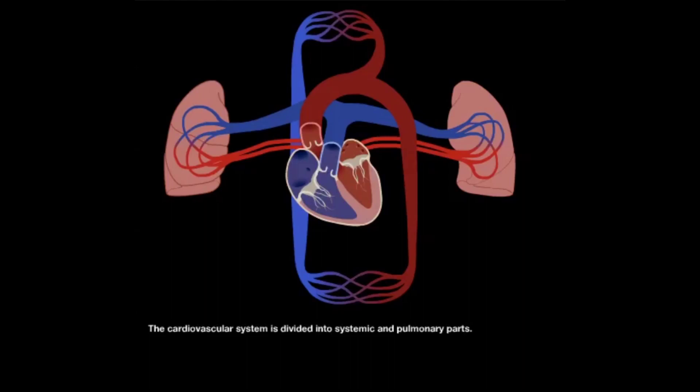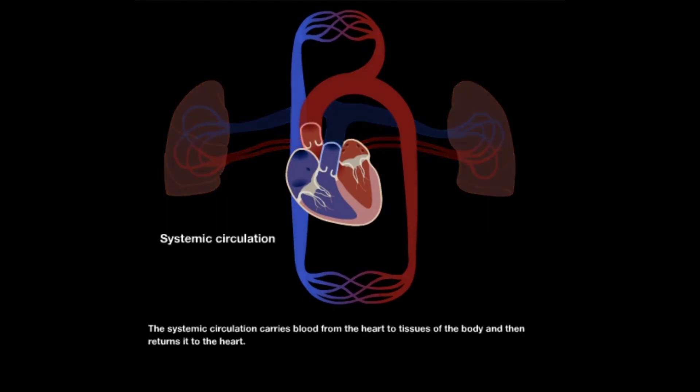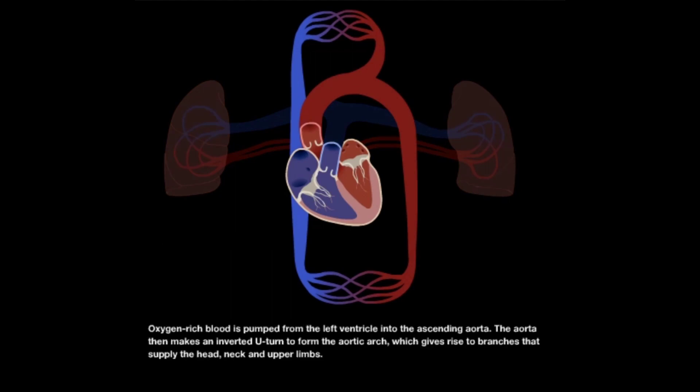The cardiovascular system is divided into systemic and pulmonary parts. The systemic circulation carries blood from the heart to tissues of the body and then returns it to the heart. Oxygen-rich blood is pumped from the left ventricle into the ascending aorta.